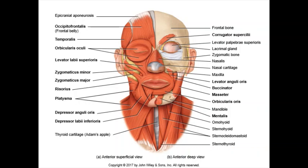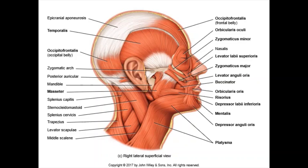Going back up toward the head — off to the sides of the head, sitting on top of your temporal bone, is something called the temporalis muscle. This muscle works in a group we call the muscles of mastication. What does it mean to masticate? To masticate means to chew. So your temporalis muscle, with a couple of other muscles, will help you to chew. If you put your hands on the sides of your head, right above the ear, you'll feel it contract as you're chewing.